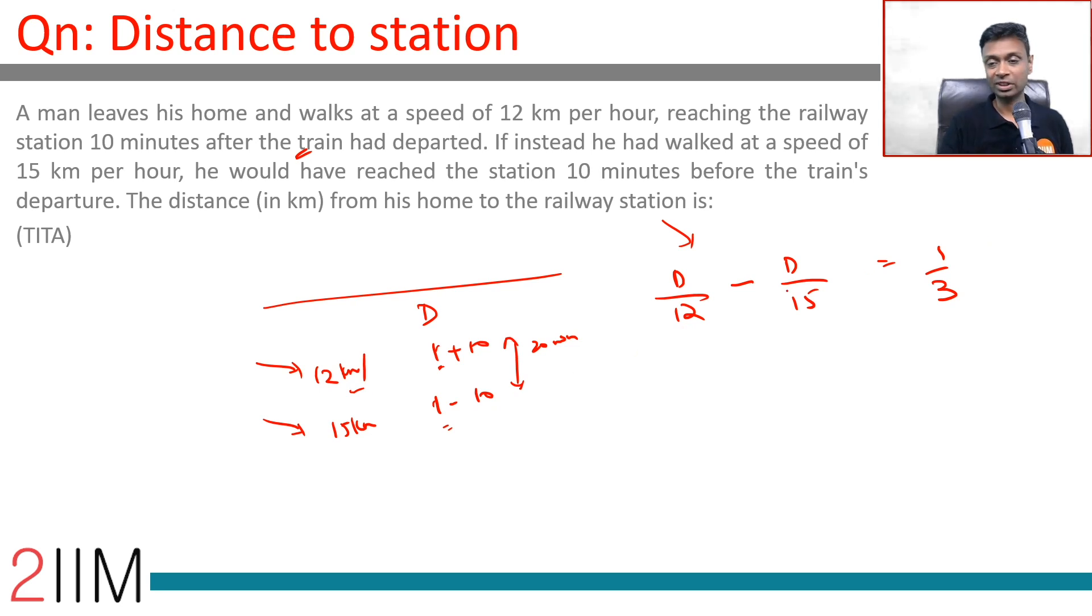And then we are done. So LCM is 60. 5d by 60 minus 4d by 60 is 1 by 3, or d by 60 is 1 by 3. D is 20 kilometers.